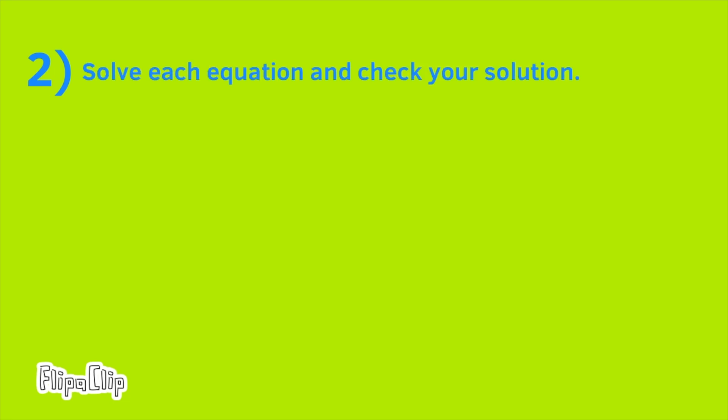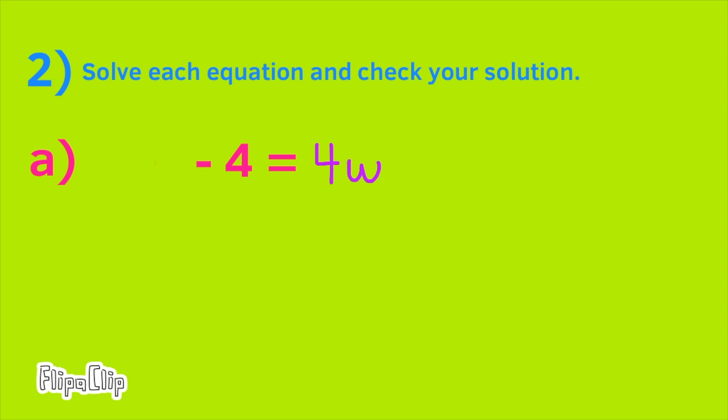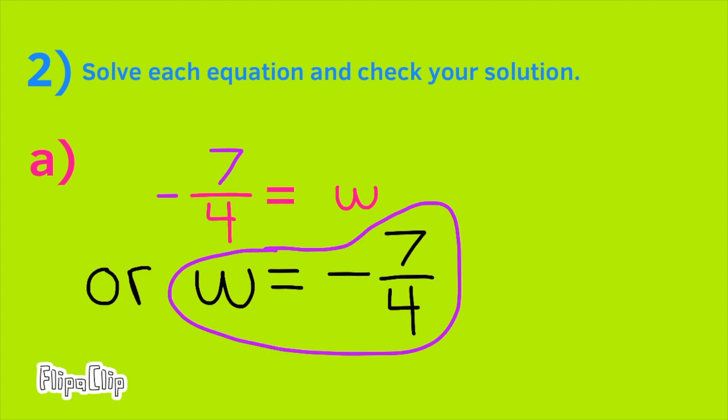Number 2. Solve each equation and check your solution. A. Negative 3W minus 4 equals W plus 3. Collect like terms. Add 3W to both sides. Subtract 3 from each side. Divide each side by 4. Negative 7 over 4 is the same as negative 7 fourths. So, negative 7 fourths equals W. Or, W equals negative 7 fourths.